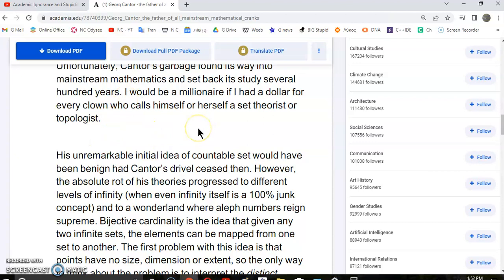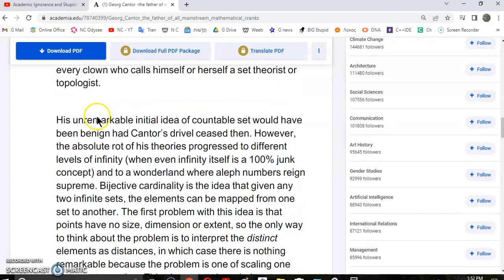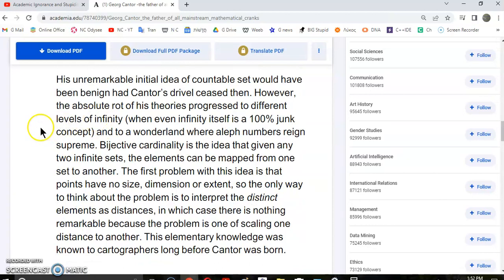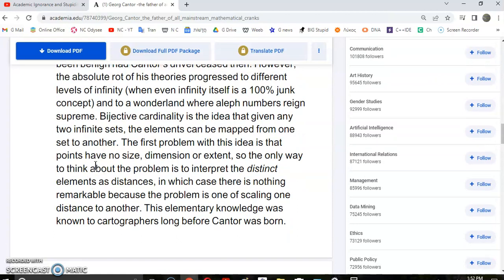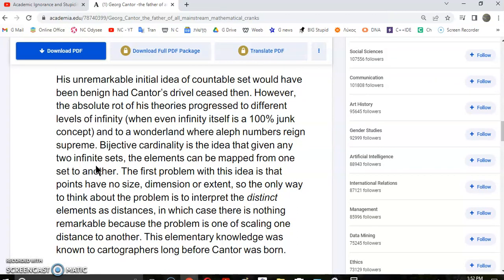I would be a millionaire if I had a dollar for every clown who calls himself or herself a set theorist or topologist. Cantor's unremarkable initial idea of countable set would have been benign had Cantor's drivel ceased right then. However, the absolute rot of his series progressed to different levels of infinity, even when infinity is itself a junk concept, and to a wonderland where aleph numbers reign supreme.